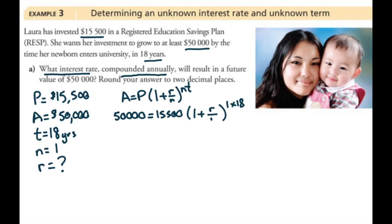So some of the steps change here. As we go through it, I'll explain those as we go. We still have 50,000 equals 15,500. We can still do a little bit of work in the bracket because r divided by 1 is r. And the exponent, 1 times 18, is 18.